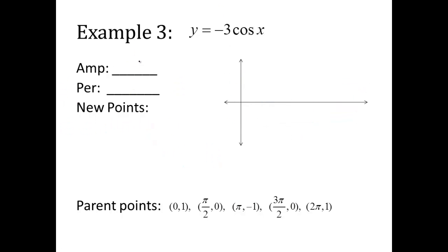Another example. Amplitude. This, remember, a is right here. Amplitude is always the absolute value of that. So it's the absolute value of negative 3, which is 3. Period: 2π divided by b. Well, b is just a 1 here. So it's just 2π. That's not changed.